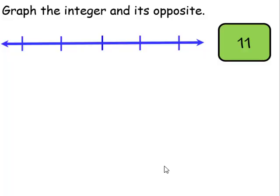Let's graph the integer and its opposite. When we say opposites now, in this case it's going to be on the opposite side of the number line. Remember, we have a positive side and a negative side. What divides these two sides is the number 0.